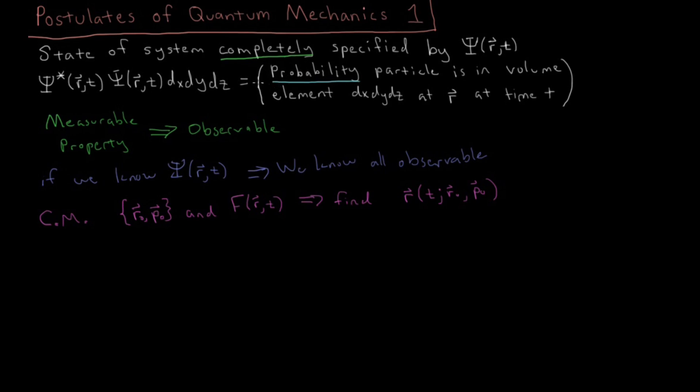Okay, then the other thing that falls out of here, given that this is an interpretation of probability, is that we get the normalization conditions that we talked about,